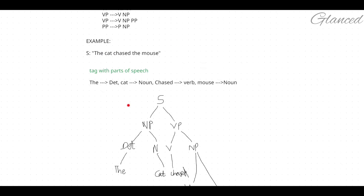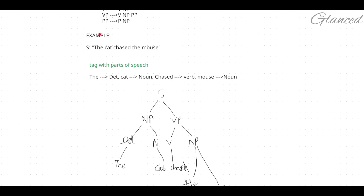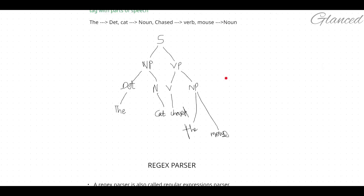Let's see the example now. I'm taking the example: 'The cat chased the mouse.' First, we tag each word with its part of speech. 'The' is a determinant, 'cat' is a noun, 'chased' is a verb, 'the' is again a determinant, and 'mouse' is a noun.